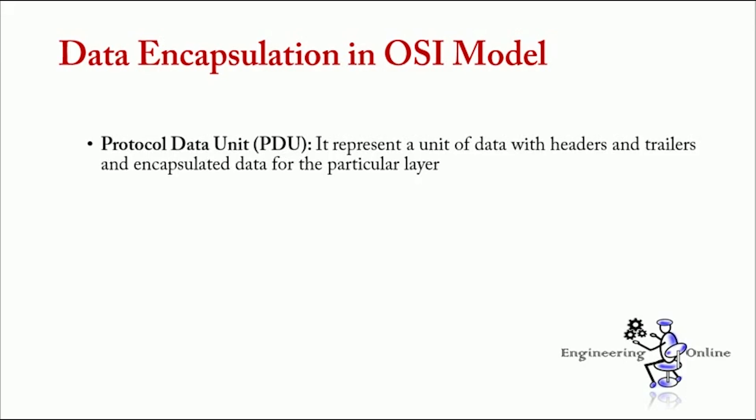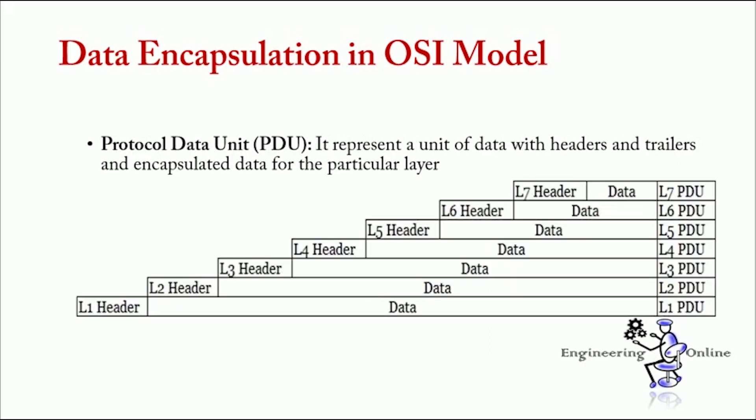PDU represents a unit of data with headers and trailers and encapsulated data for the particular layer. Now, since OSI model has 7 layers, so PDUs are numbered from 1 to 7. While the physical layer being the number 1, so its PDU would be L1 PDU and the last layer would be L7 PDU. Now, the term L3 PDU defines data, encapsulated data, and L3 header.